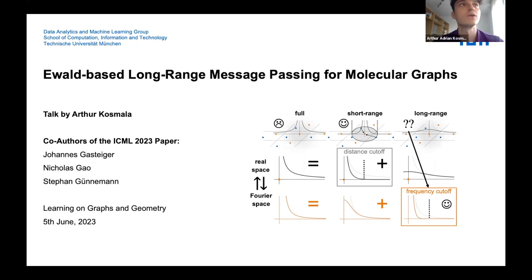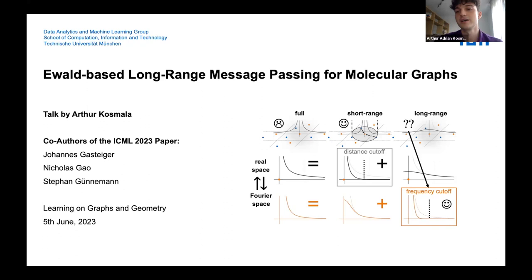In a nutshell, this is a new type of GNN layer, specifically in molecular applications or more generally point cloud applications, that allows the GNN to learn messages without any limit on the distance. To do so, it makes use of a very old and classic technique called Ewald summation. It's really somewhere in between physics and machine learning, and I hope there will be something for people from all of these backgrounds today.